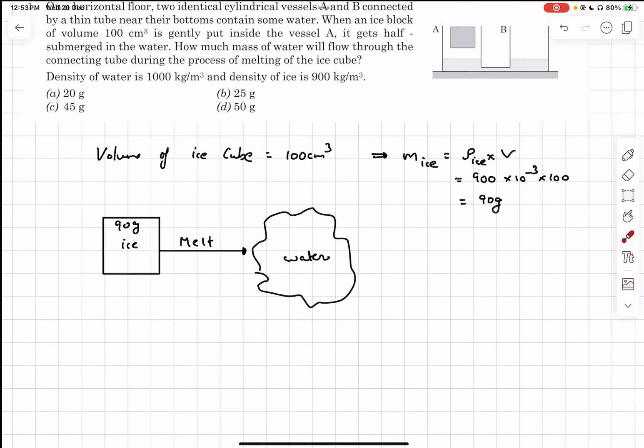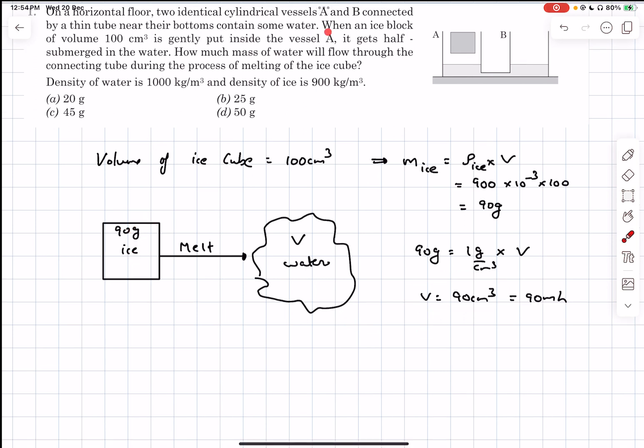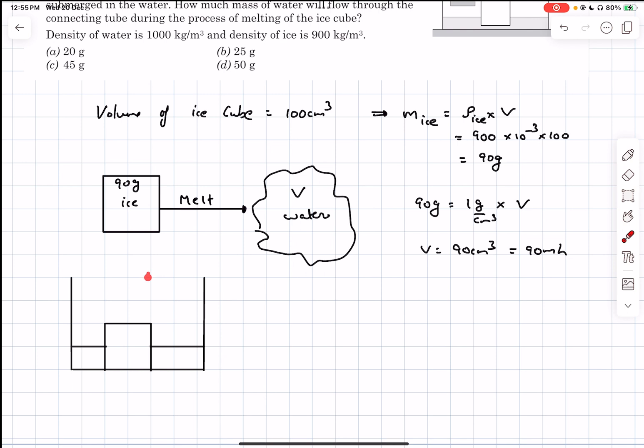So an ice cube is being submerged inside water and we have to talk about how much water passes through this connecting tube in the process of melting this ice. So first of all guys, the volume of the ice cube is given to be 100 centimeter cube. And with that, we can find the mass of the ice cube. That's simply going to be the density of the ice times its volume and which comes out to be 90 grams.